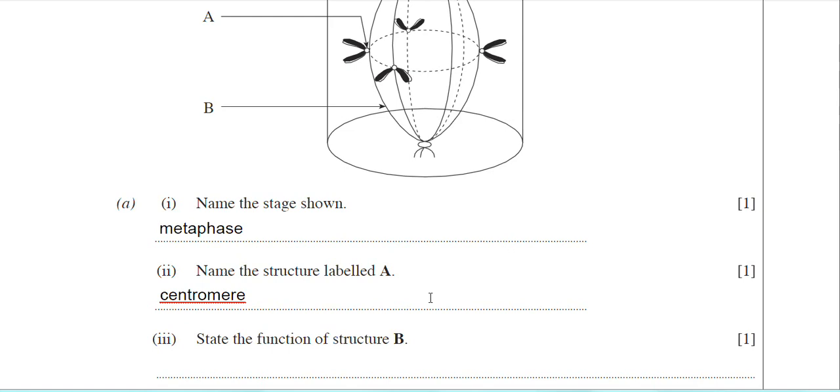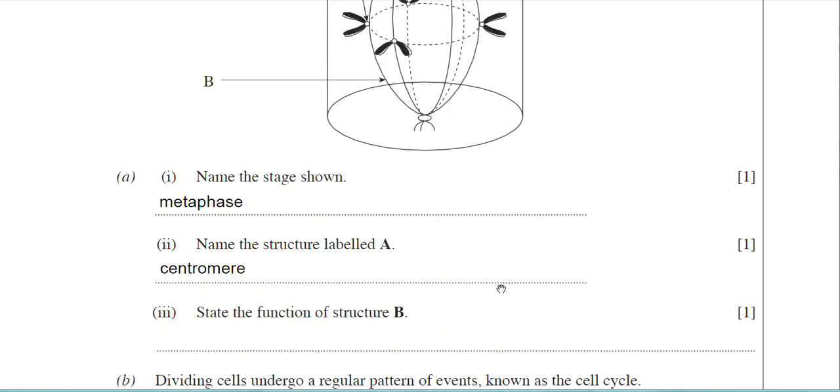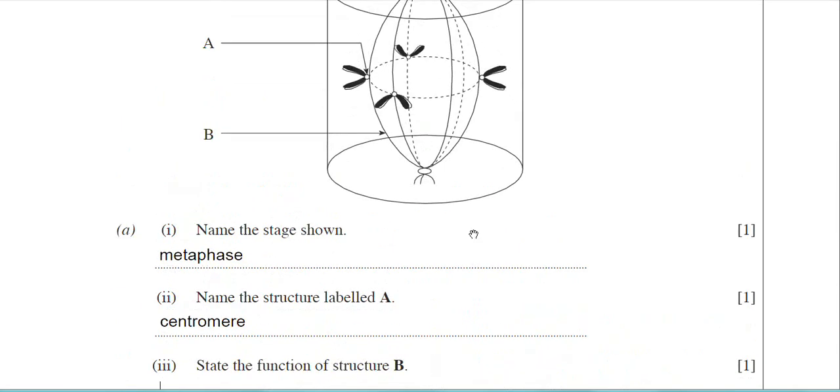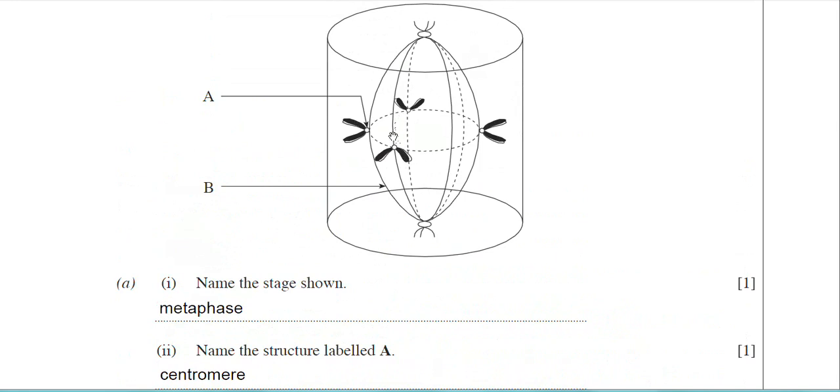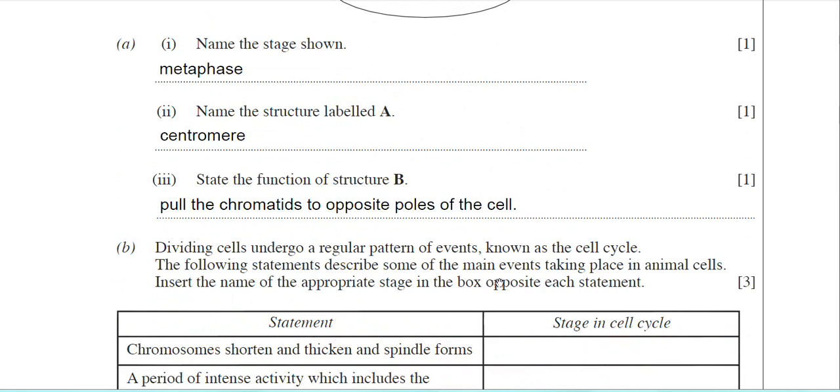Part three: state the function of structure labelled B. The structures there actually span from pole to pole. The centromeres are actually attached to them, so they're going to be the spindle fibres. The function of those spindle fibres is to actually shorten or contract and when they do, they pull the sister chromatids to opposite poles. They don't pull the chromosomes to the opposite poles. It's the sister chromatids. It's quite an important distinction to remember there.